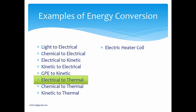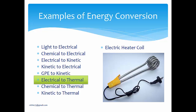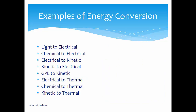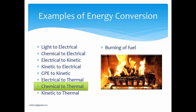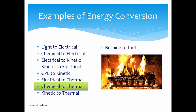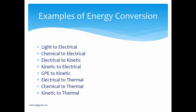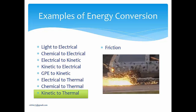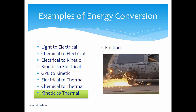Electrical to thermal — a simple example is an electrical heater coil. You plug it into the wall socket, which supplies electrical energy, causing the coil to heat up and boil water. Chemical to thermal — any burning of fuel is chemical to thermal. The chemical potential energy within the wood is ignited, generating thermal energy or heat. Kinetic to thermal — the example is friction. A spinning wheel rubbing against the ground generates thermal energy and sparks.